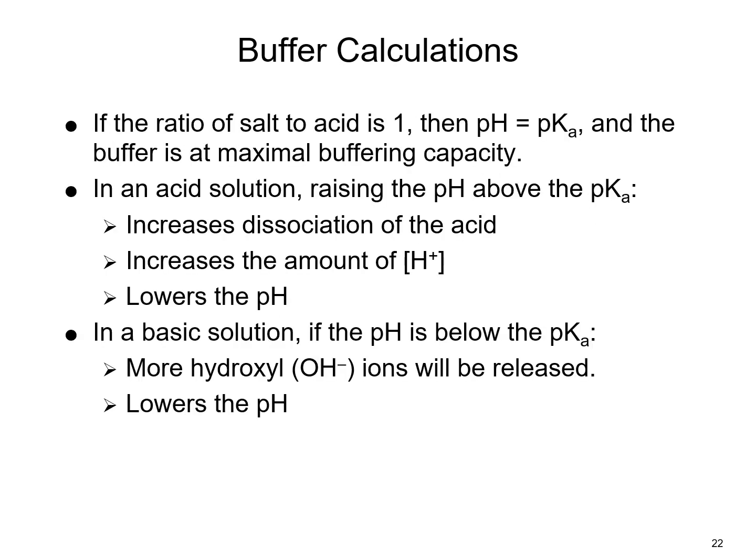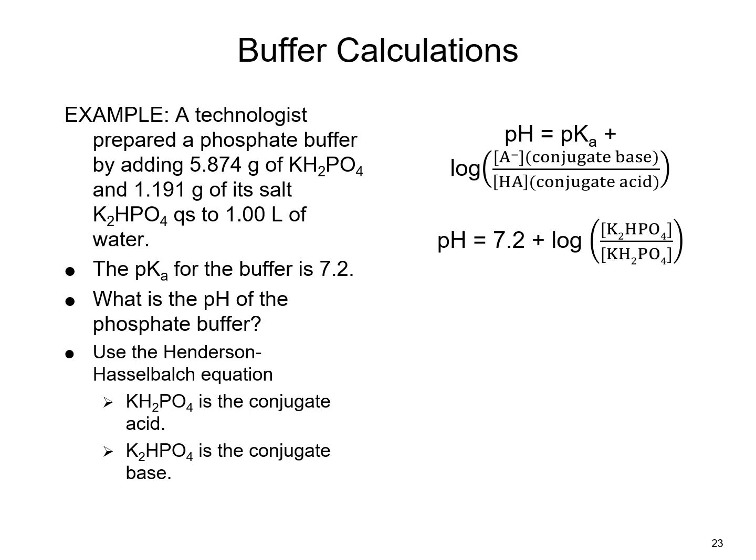This tells us that if the ratio of salt to acid is 1, the pH equals the pKa, meaning the buffer is at maximal buffering capacity. In an acidic solution, raising the pH above the pKa increases dissociation, increases hydrogen ions, and lowers the pH. In a basic solution, if the pH is below the pKa, more hydroxyl ions are released, lowering the pH. Here we have an example where a technologist prepares a phosphate buffer by adding 5.874 g of monopotassium phosphate and 1.191 g of dipotassium phosphate to water to make 1.0 L, with a pKa of 7.2.